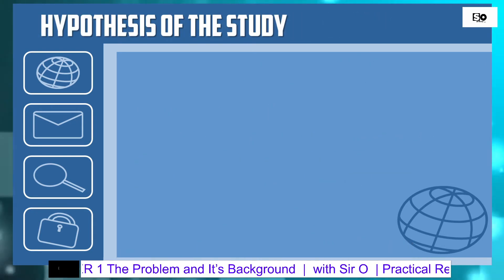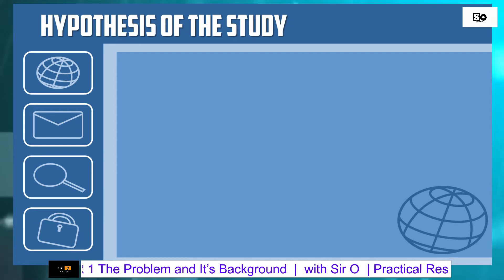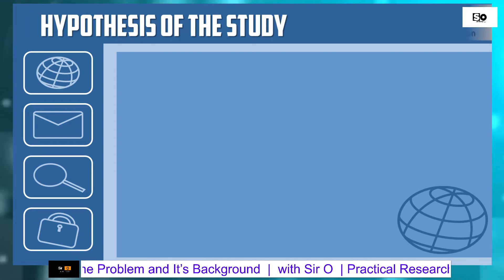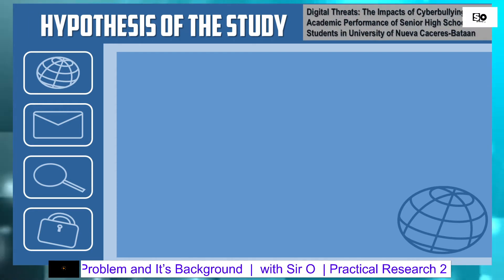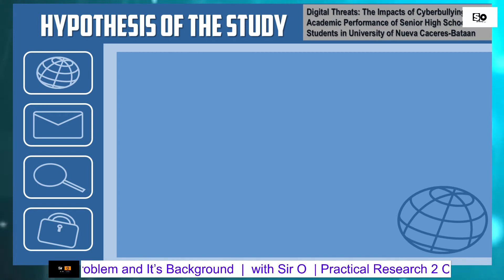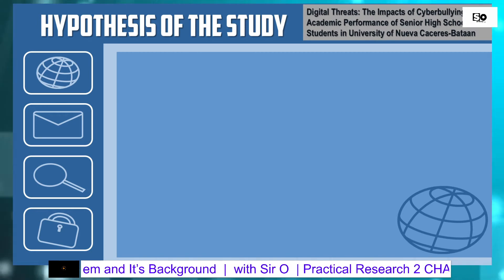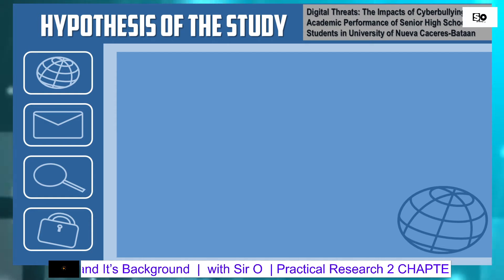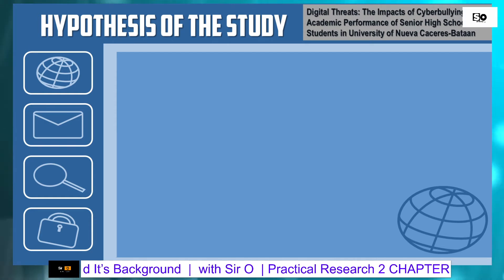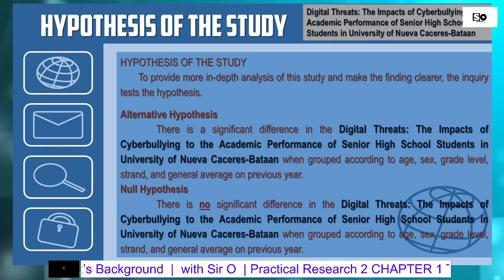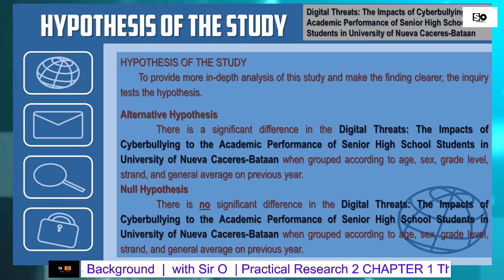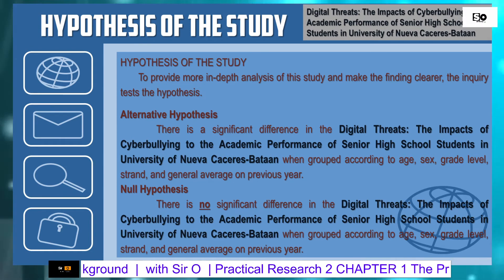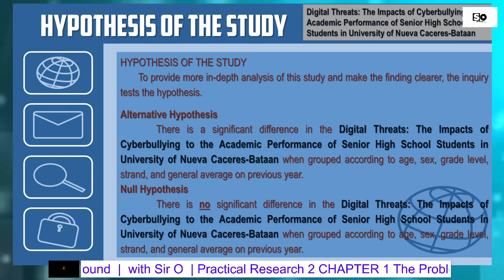Here is an example of a hypothesis of the study. The title of this research is 'Digital Threats: The Impact of Cyberbullying to the Academic Performance of Senior High School Students in the University of Nueva Caceres, Bataan.' The example shows an alternative hypothesis as well as a null hypothesis.